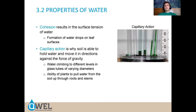Cohesion results in the surface tension of water — this is how water forms drops on a leaf surface — and it's also why there is such a thing as capillary action. Soil is able to hold water and move it in directions against the force of gravity. When plant roots take up water from the soil, they pull water off soil particles, which pulls more water because water sticks to itself, making a little chain of water that flows up through the plant and out the leaf. This action is called capillary action.